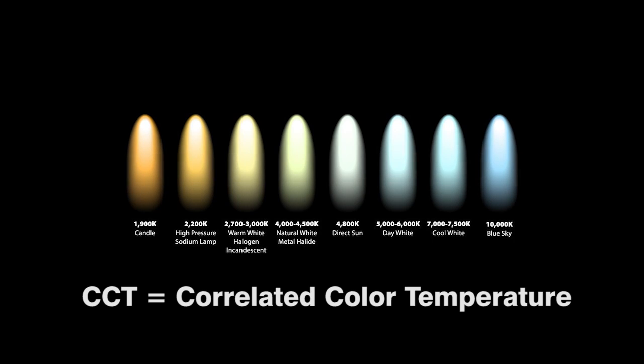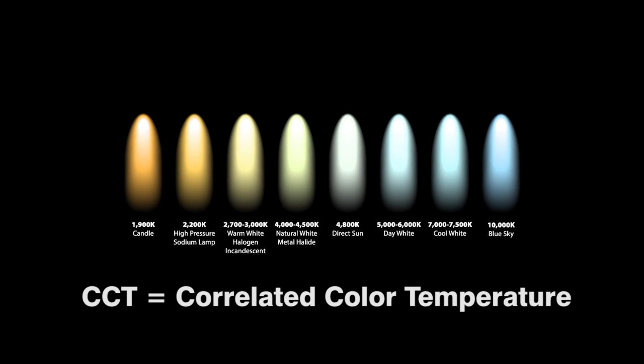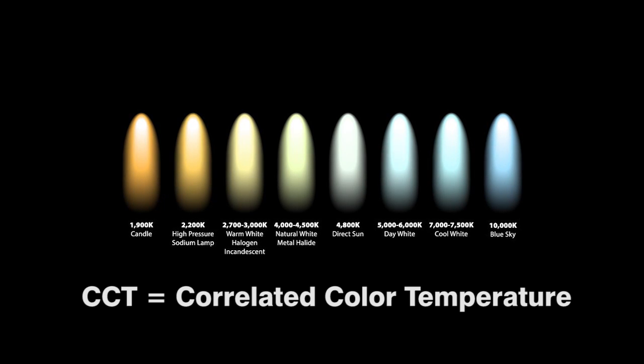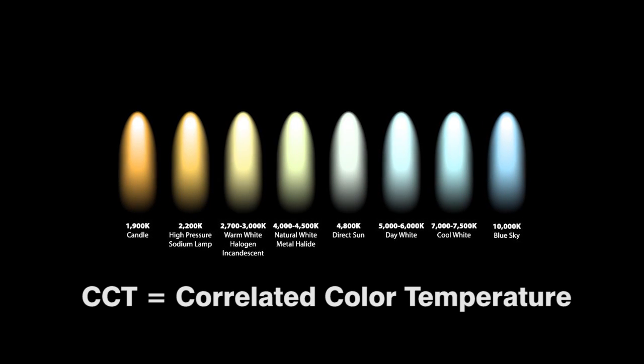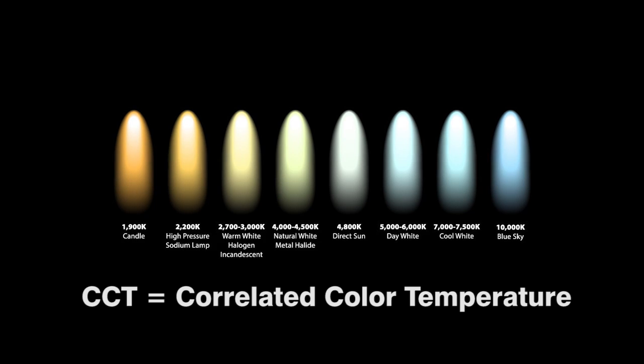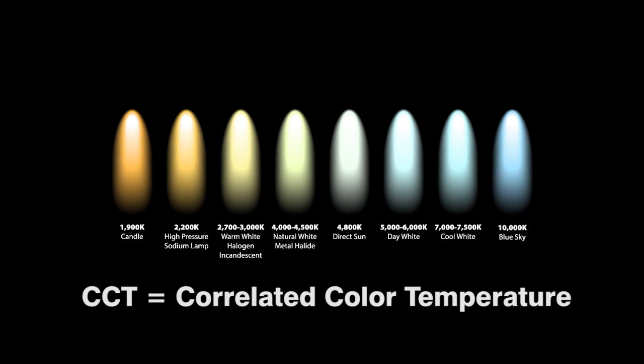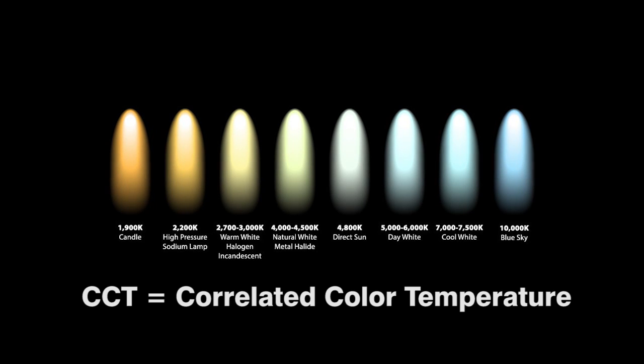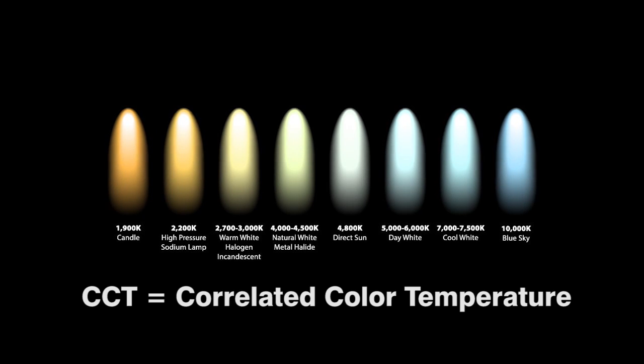When you hear people talking about warm white light or cool white light, they are talking about CCT, or the color temperature of the light given off.